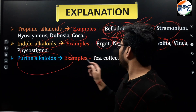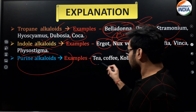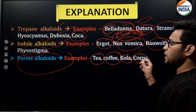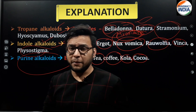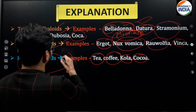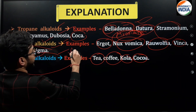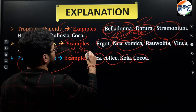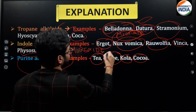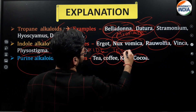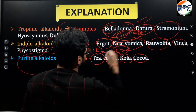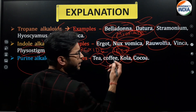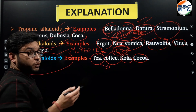Purine alkaloids include tea, coffee, cola, and cocoa. The test for purine alkaloids is the Murexide test. Tea's specific chemical constituent is also important to note for exam purposes.